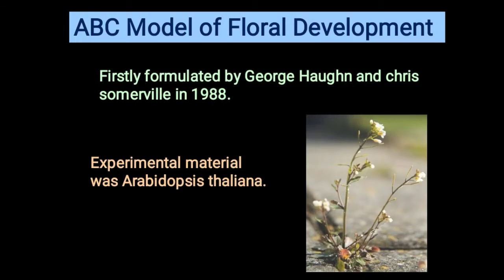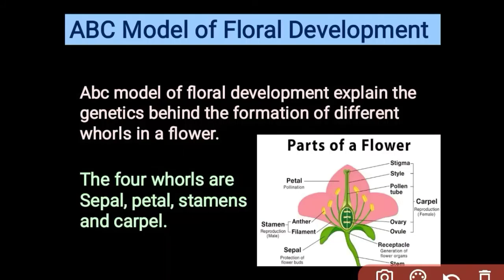The ABC model of floral development was firstly formulated by George Hung and Chris Sommerville in 1988. The experimental material used was Arabidopsis thaliana. The ABC model explains the genetics behind the formation of different whorls in the flower.